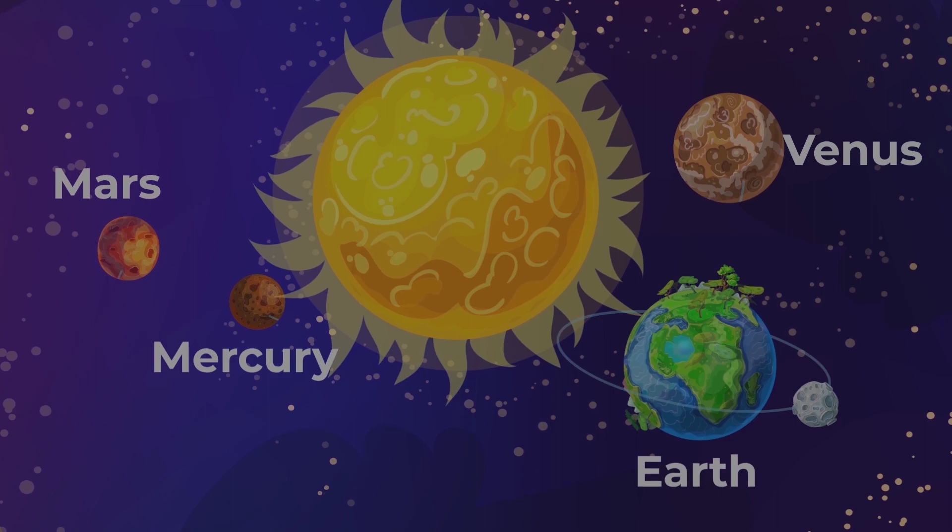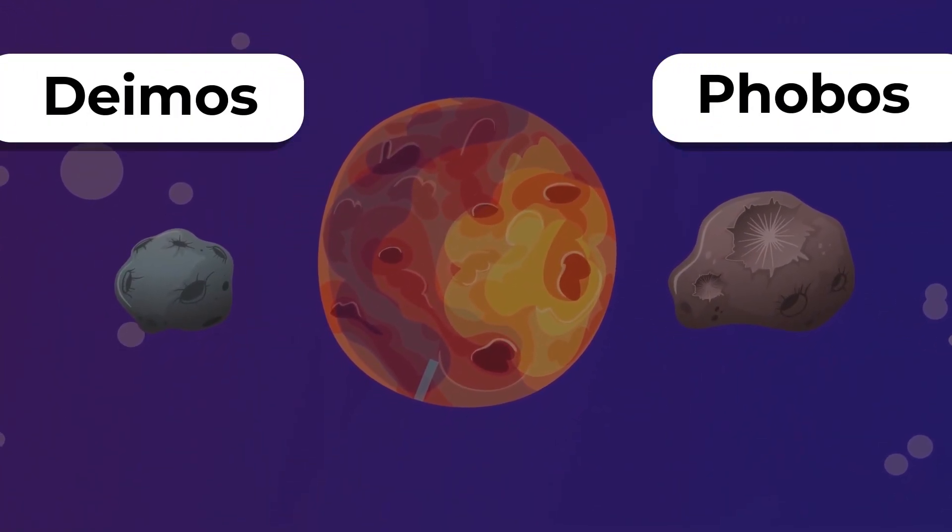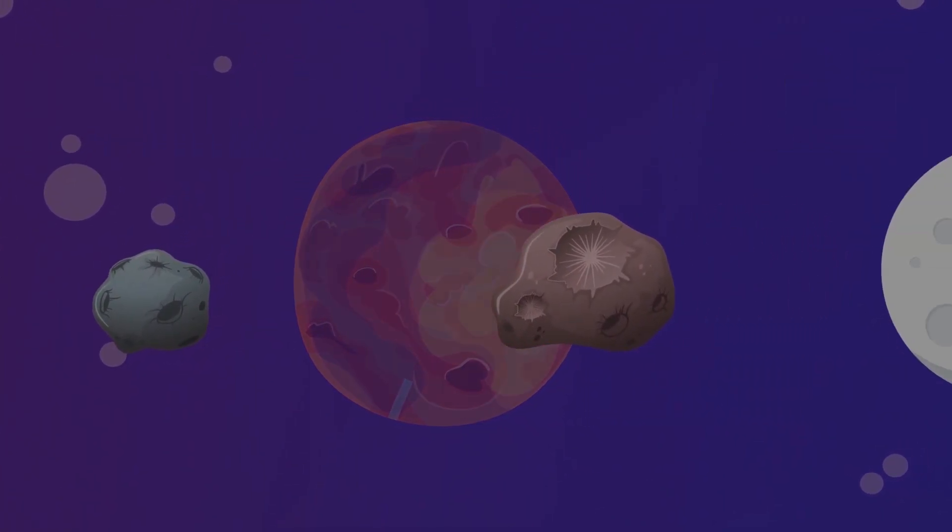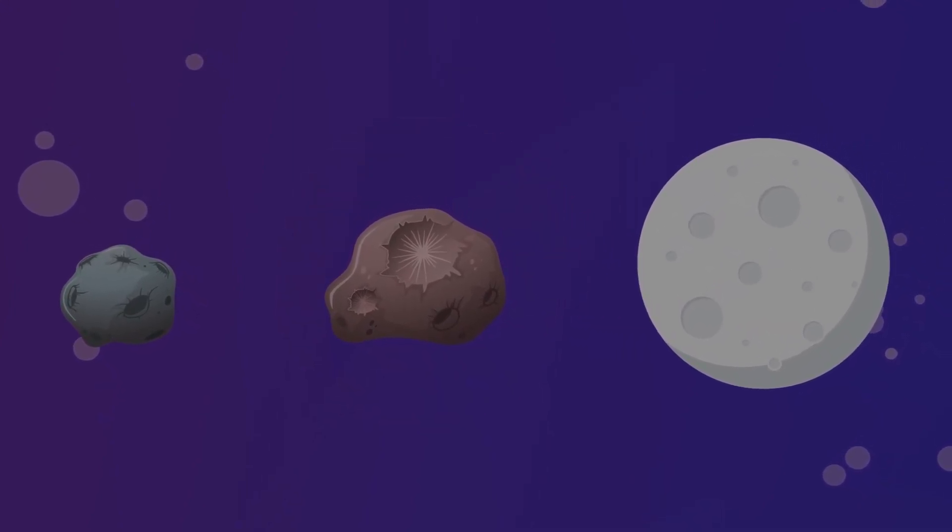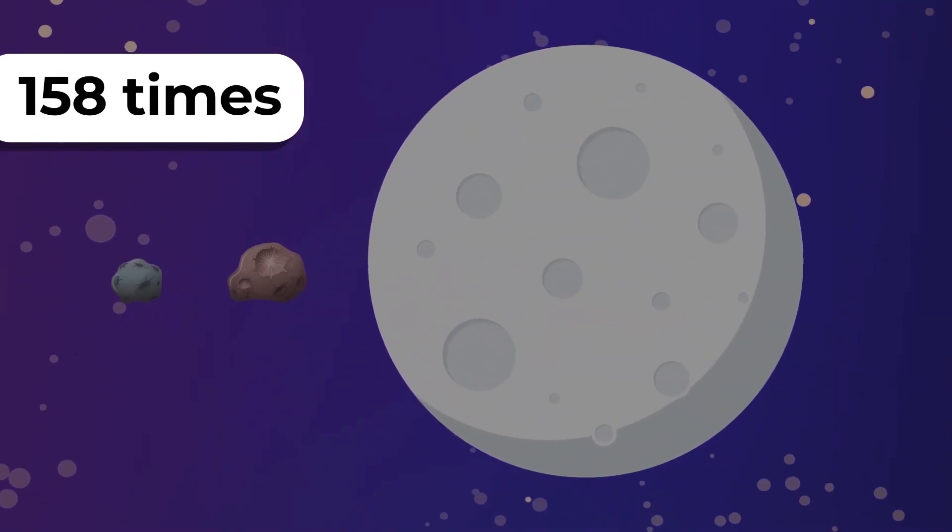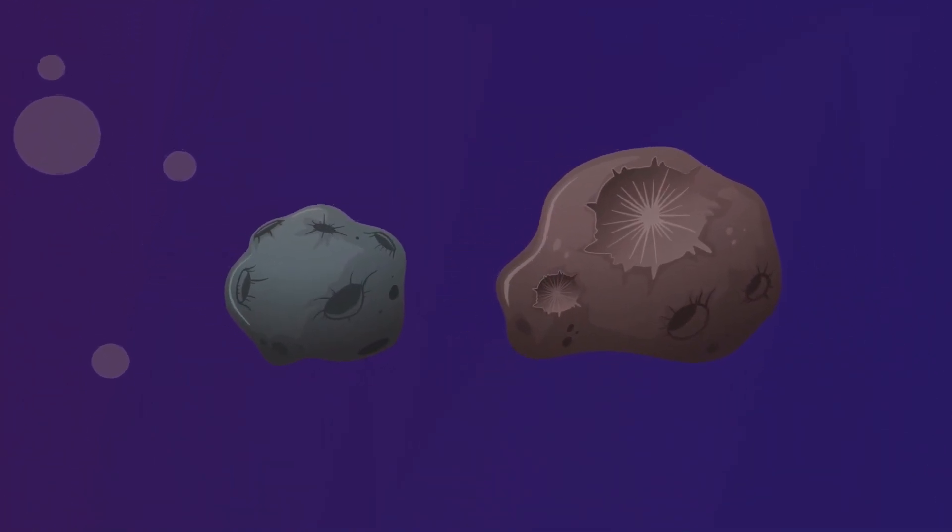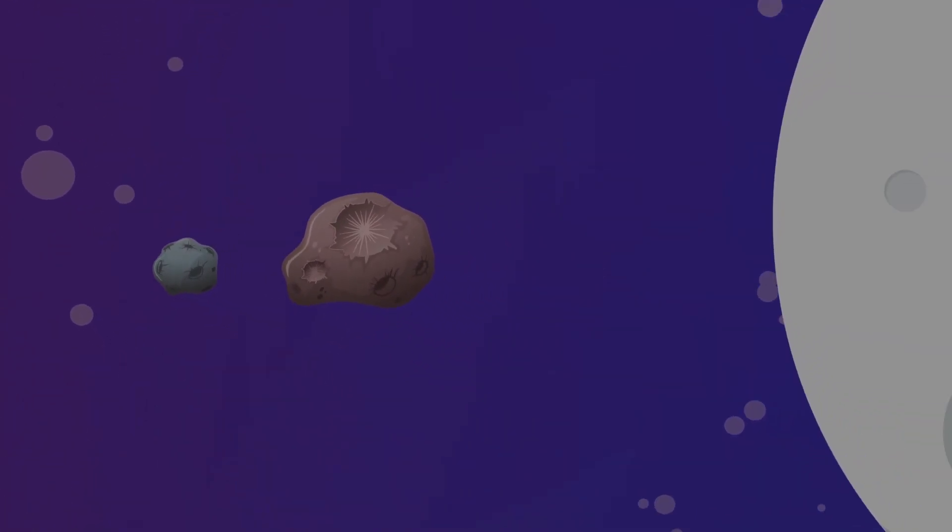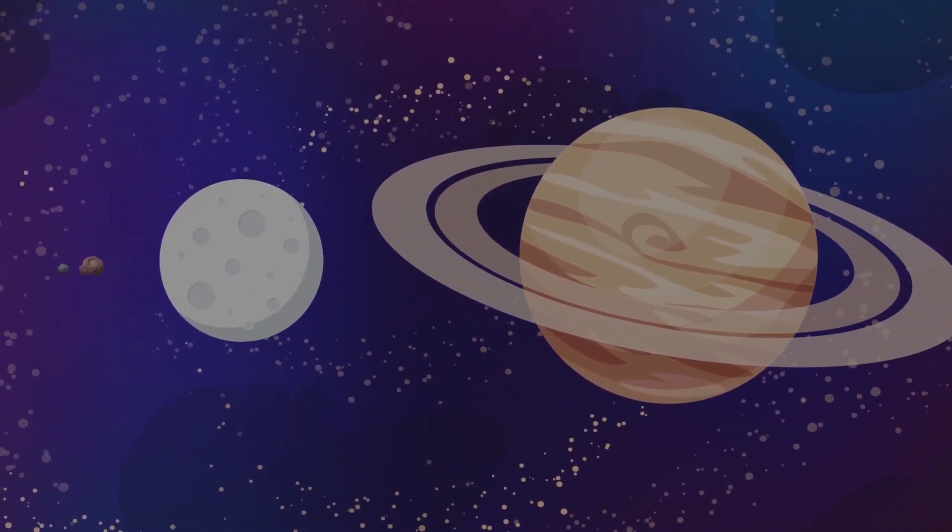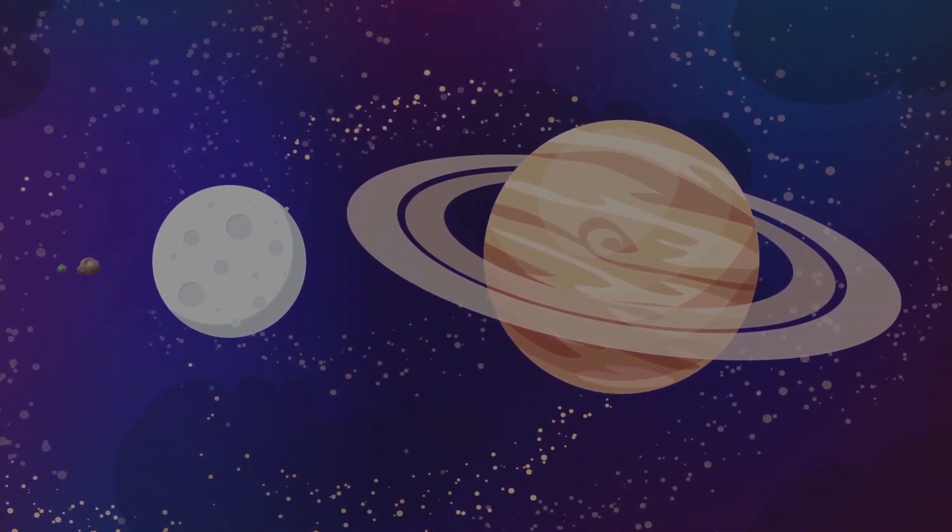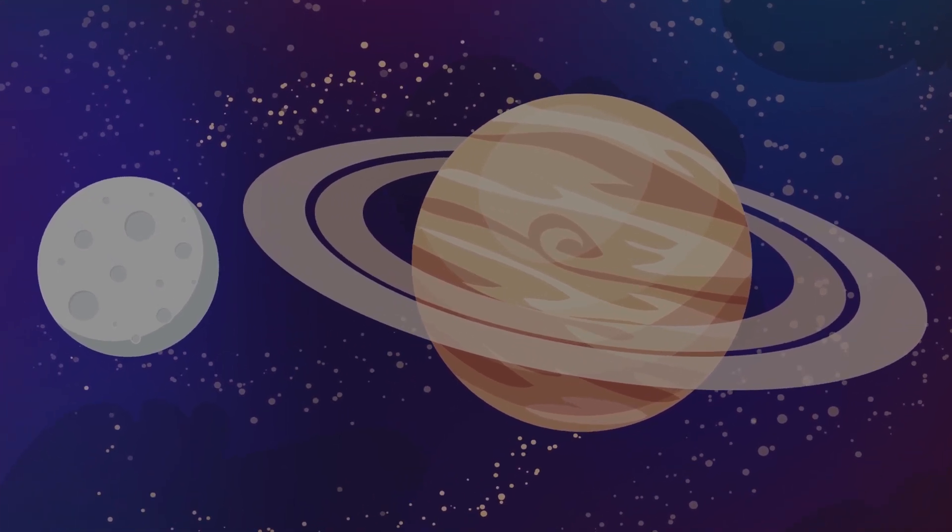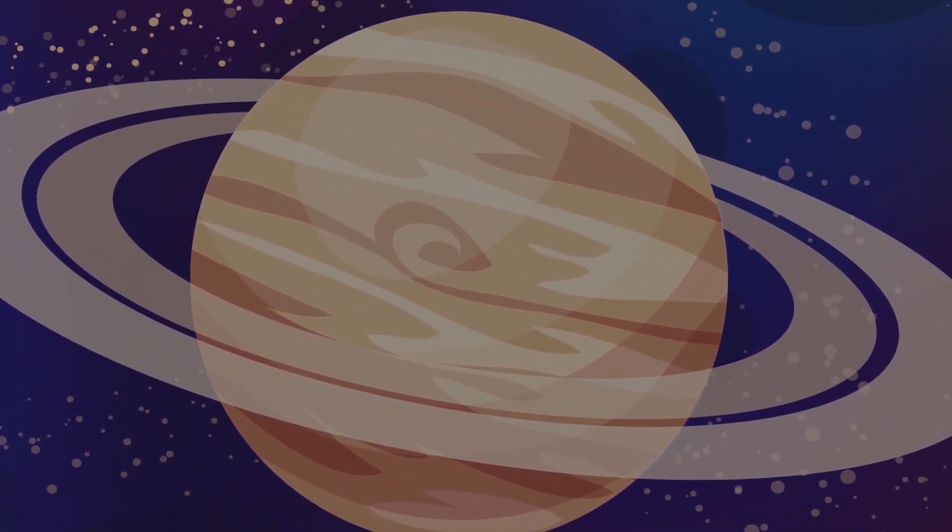The first two satellites don't exist at all. Phobos and Deimos revolve around Mars, but compared to the Moon, they look more like small boulders. Phobos is 158 times smaller than the Earth's satellite, and Deimos is even smaller than that. Sure, there are satellites much larger than the Moon in our solar system, but they formed near the gas giants, which is a completely different group of planets and therefore have their own rules there.